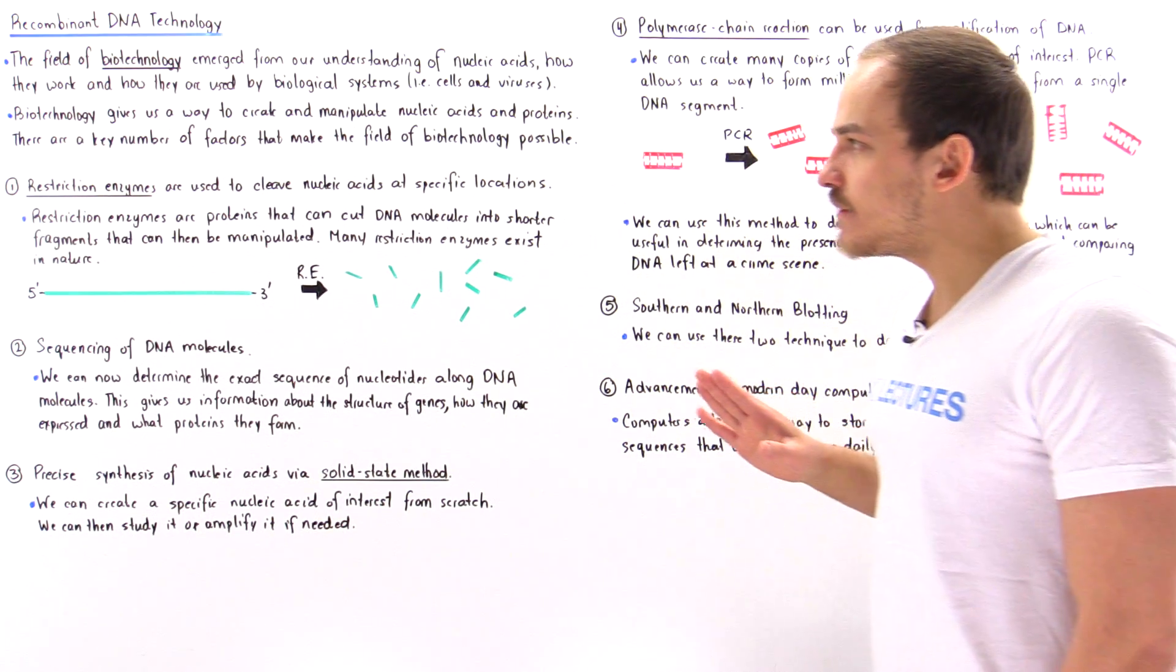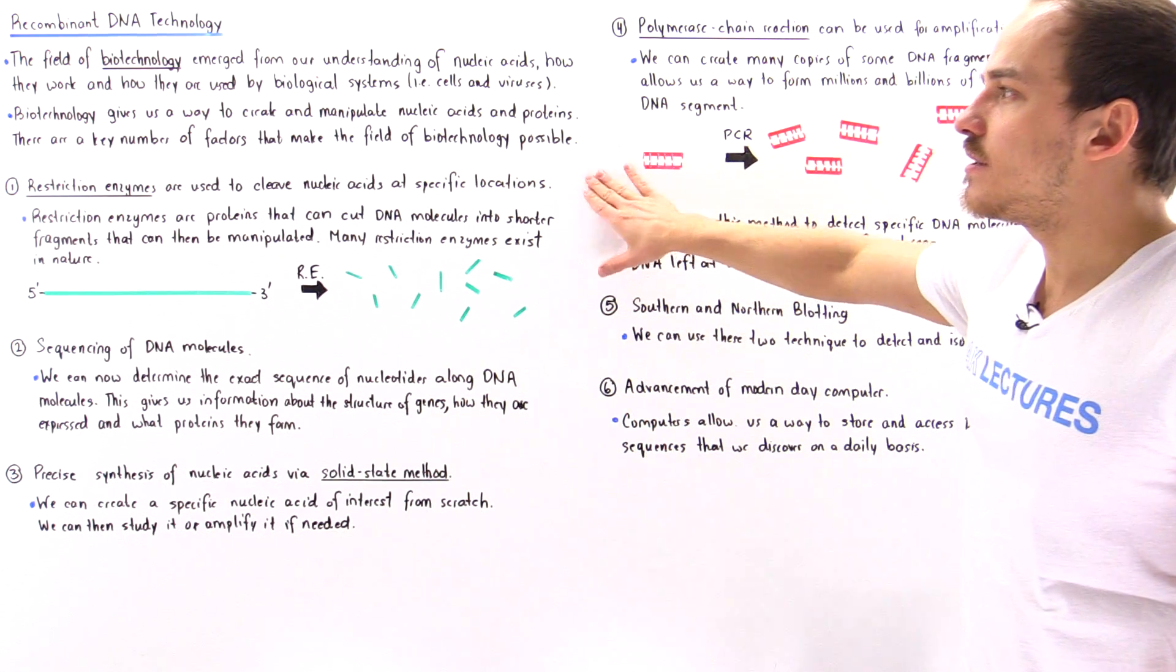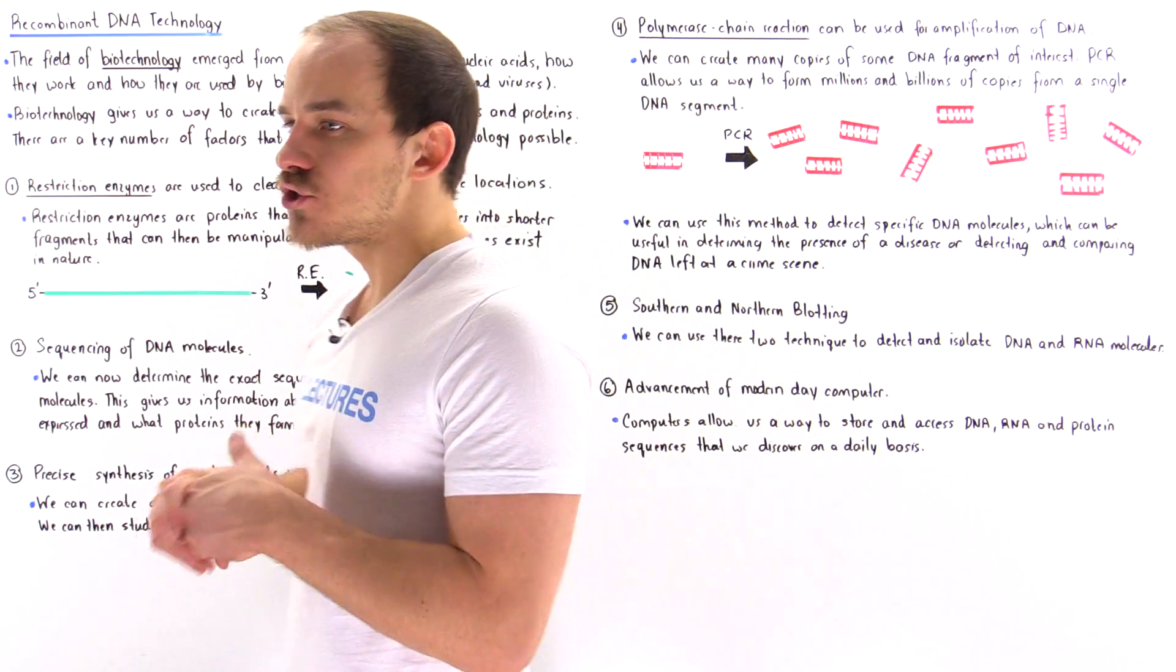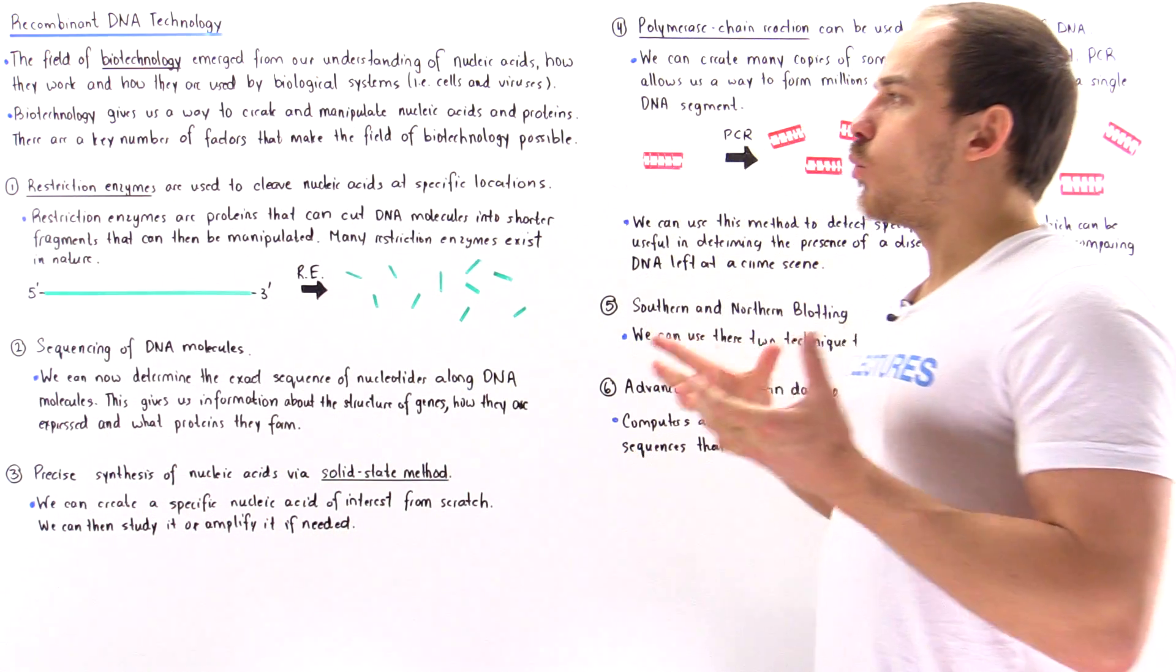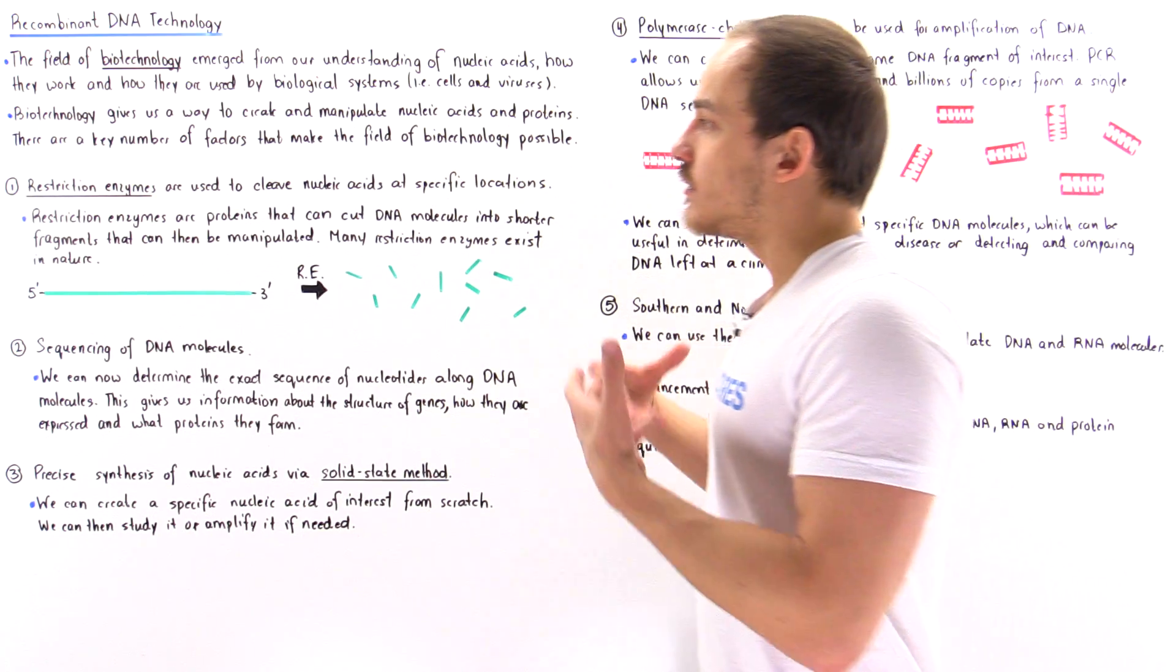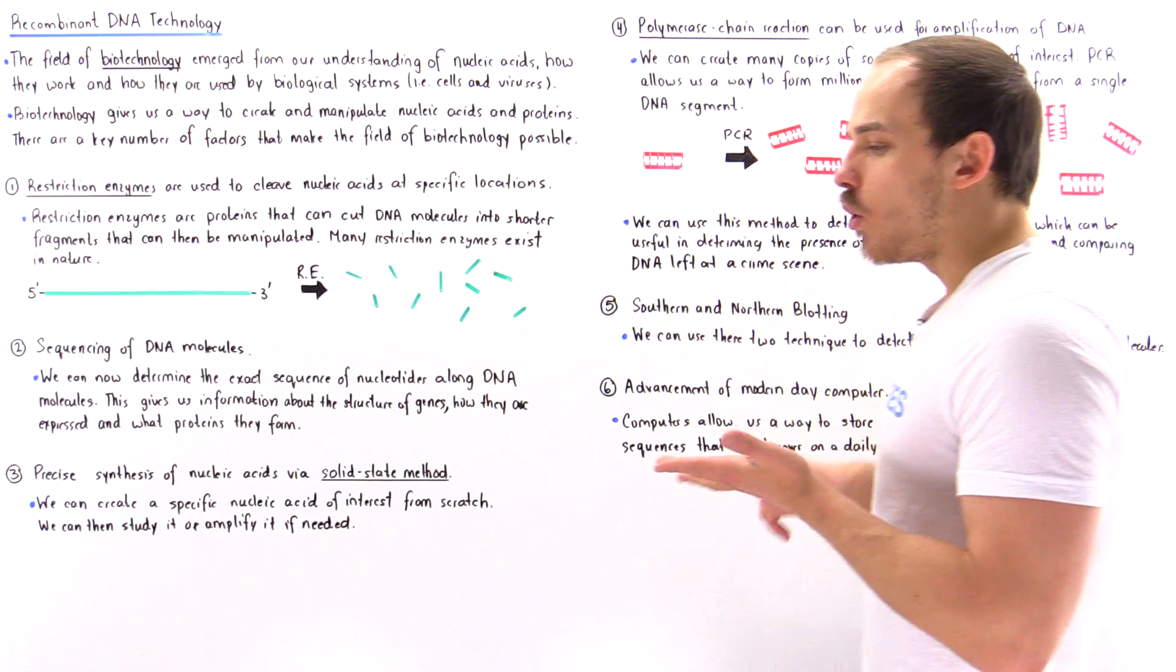And more specifically, there are six key factors that played a role in basically allowing this biotechnology field to actually arise. So let's briefly discuss what these six factors are, and in the next several lectures we're going to take a look at these factors in much more detail.